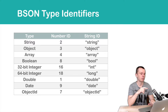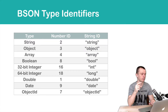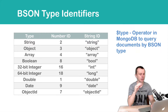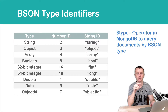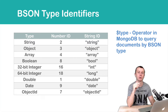Each BSON type has its own unique identifier or number ID. For example, strings have number ID 2, arrays have number ID 4, and so on. Those types also have string IDs, and you can use both number IDs and string IDs in a special $type operator in the MongoDB shell that can be used to query documents by value types.